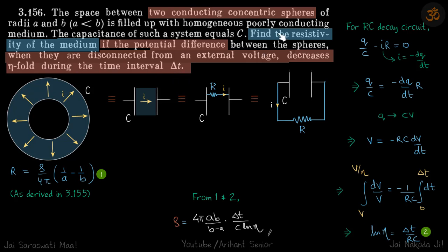So we need to find the resistivity of the medium. You can see that this capacitor is getting discharged and it takes delta t time for the voltage across the capacitor to decrease eta-fold. So we'll see what's happening here.